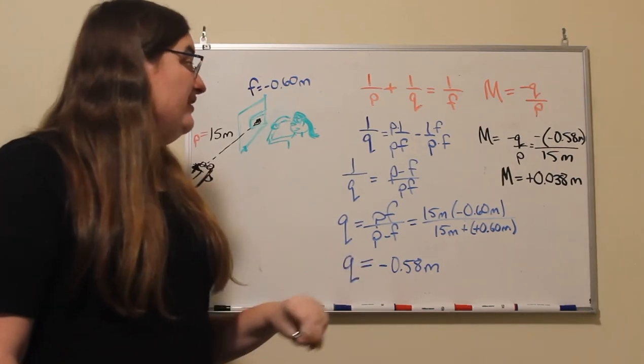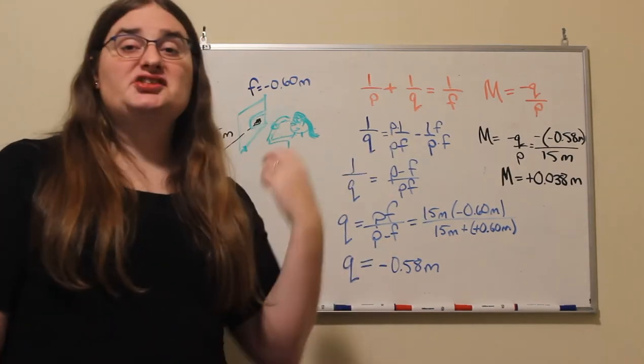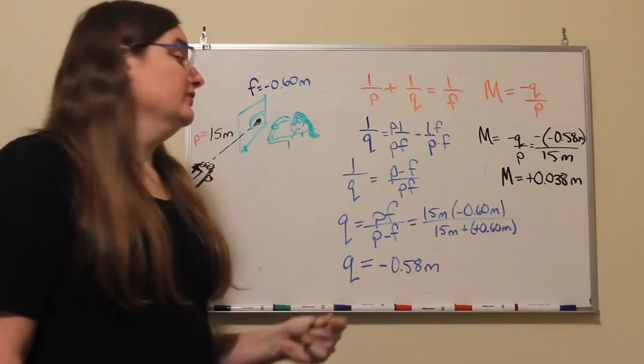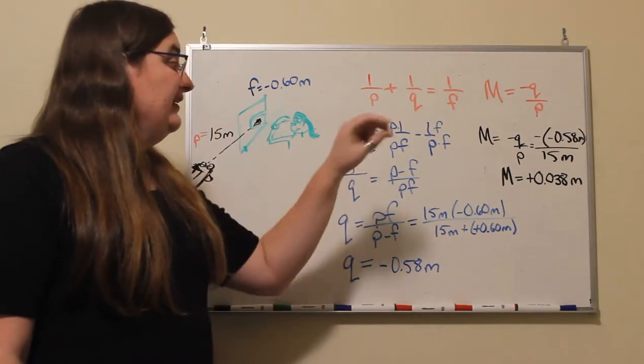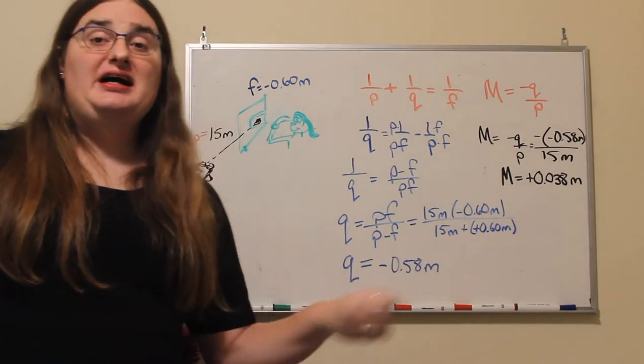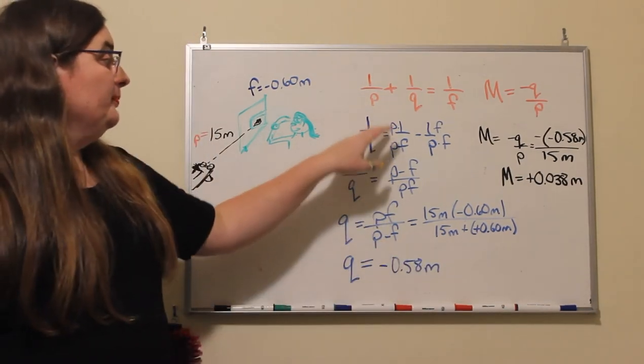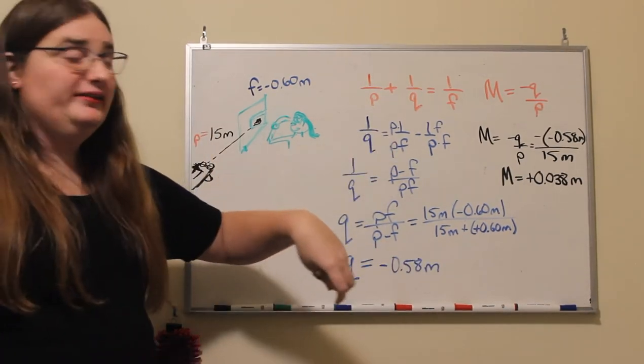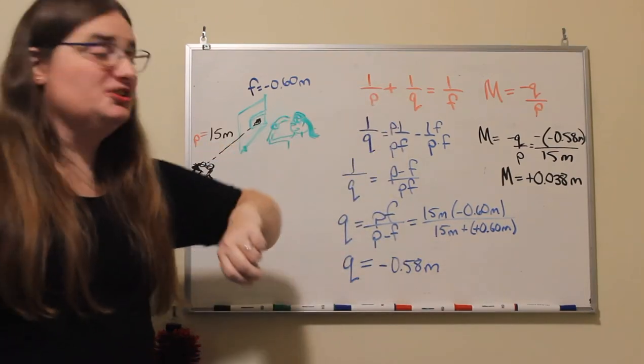And let's get rid of all of the fractions and bring it down to just 1. So on the right hand side I'm going to force myself to have a common denominator by multiplying 1 over my focal length, the numerator and denominator, by my object distance p.